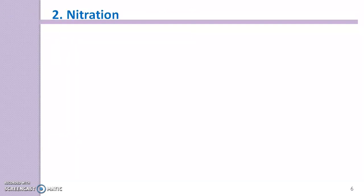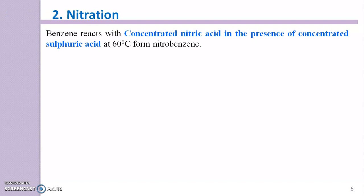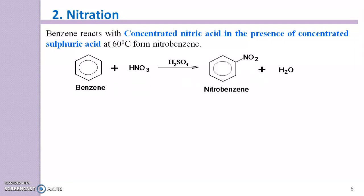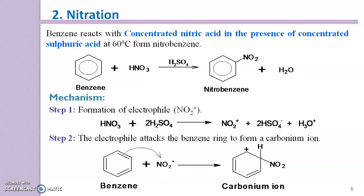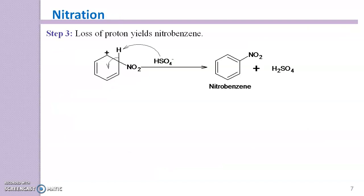The second reaction is nitration. Benzene reacts with concentrated nitric acid in the presence of concentrated sulfuric acid at 60°C to form nitrobenzene. This mixture of concentrated nitric acid and concentrated sulfuric acid is called the nitrating mixture. In the mechanism, HNO3 reacts with H2SO4 to form NO2+ (nitronium ion), which is the electrophile. This NO2+ electrophile attacks the benzene ring to form a carbonium ion, and then loss of a proton gives nitrobenzene.